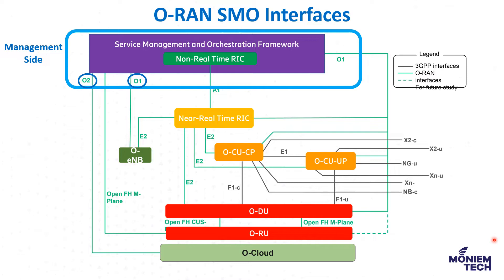The third and most important interface is A1, the interface between the non-real-time RIC and the near-real-time RIC. We will explain them in a separate episode — what is RIC, what is the difference between non-real-time RIC and near-real-time RIC, and what are the applications: R-Apps, X-Apps, everything.